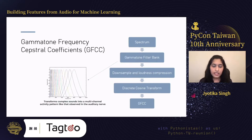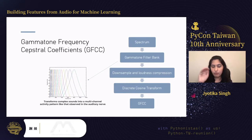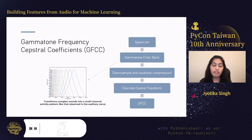A similar process produces Gammatone Frequency Cepstral Coefficients (GFCC), except using the gammatone filter bank. The gammatone filter bank is similar to the mel filter bank but with smoother peaks. This is supposed to more closely represent how human hearing works and is known as a front-end simulation of the cochlea of the ear.